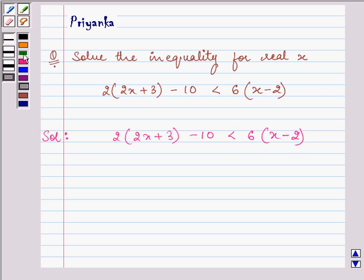We can see that the next step will be removing the brackets. And on doing so we have 4x plus 6 minus 10 is less than 6x minus 12. On simplifying it further we have 4x minus 4 is less than 6x minus 12.